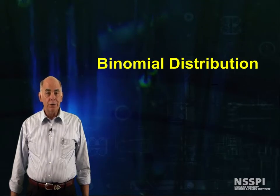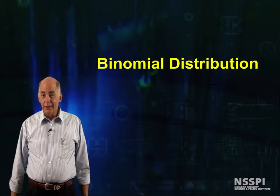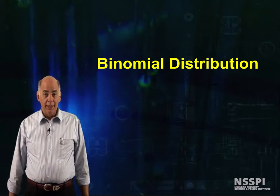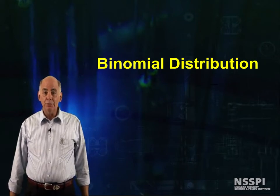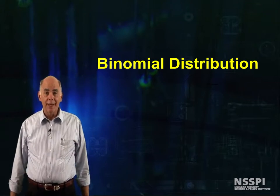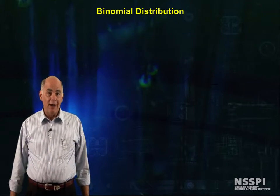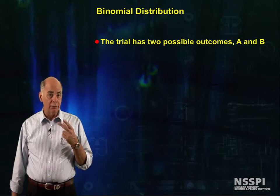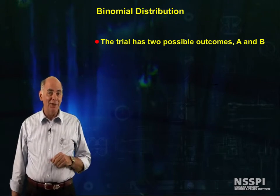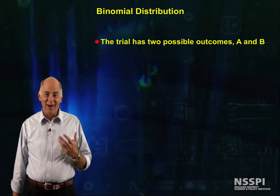The granddaddy of all statistical distributions is the binomial distribution, and it is the distribution that comes about from trials or measurements obtained as follows. The trial has two possible outcomes, A and B. Coin flipping and atomic decay come to mind.